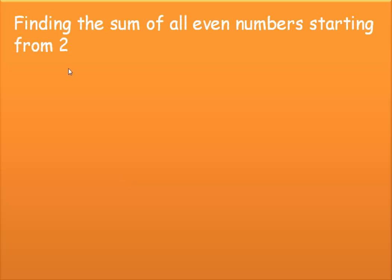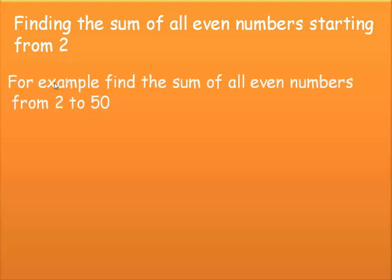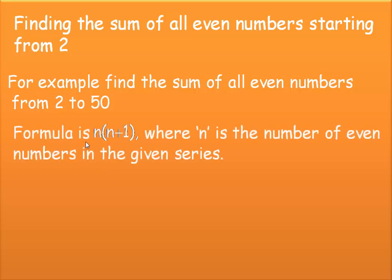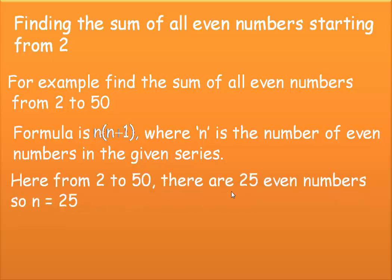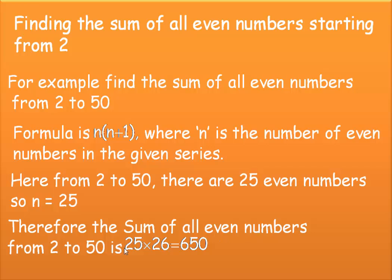Similarly, finding the sum of all even numbers starting from 2. For example, finding the sum of all even numbers from 2 to 50. The formula is n into (n plus 1), where n is the number of even numbers in the given series. From 2 to 50 there are 25 even numbers, so n equals 25. Therefore the sum is 25 into 26, which equals 650.